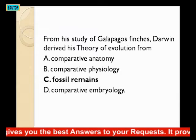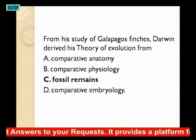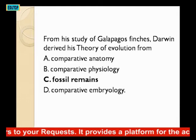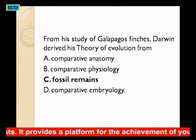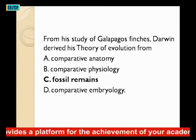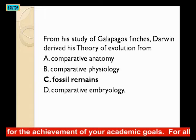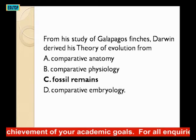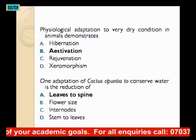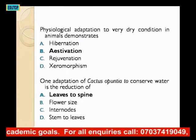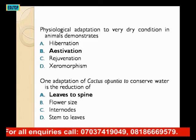From his study of Galapagos finches, Darwin derived his theory of evolution from — A: comparative anatomy; B: comparative physiology; C: fossil remains; D: comparative embryology. Darwin derived his theory of evolution from fossil remains — that's option C.